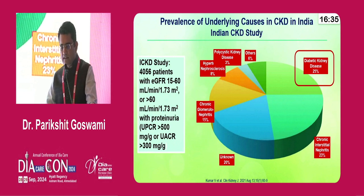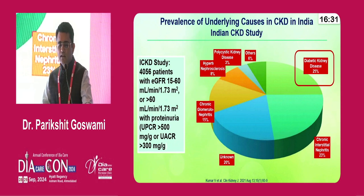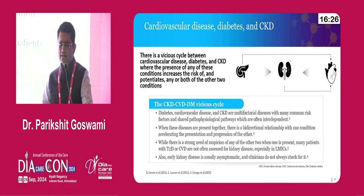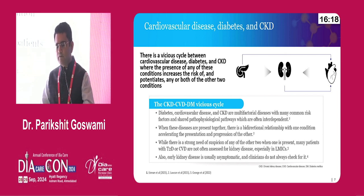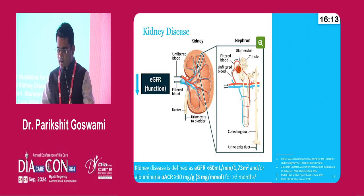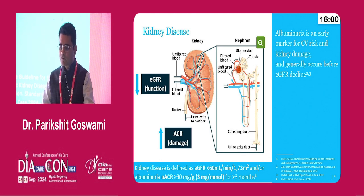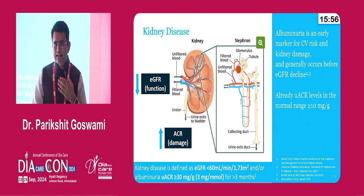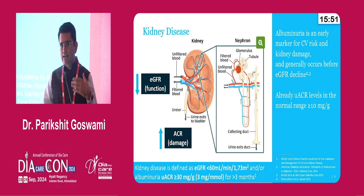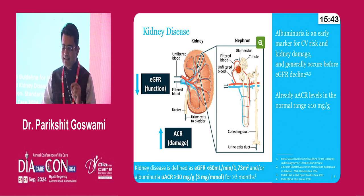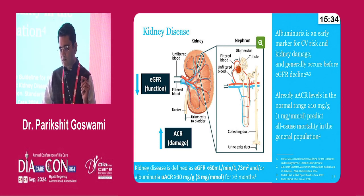Hypertension, polycystic kidney disease, and other etiologies were also found in this prevalence study. We know how cardiovascular disease, diabetes, and CKD play an interplay — if one is affected, the other may be affected. Albuminuria is an early marker for cardiovascular risk and kidney damage, and generally occurs before the eGFR decline. We generally say up to 30 is normal, 30–300 is microalbuminuria, and then macroalbuminuria. Even UACR levels more than 10 mg/g pose a high cardiovascular risk.